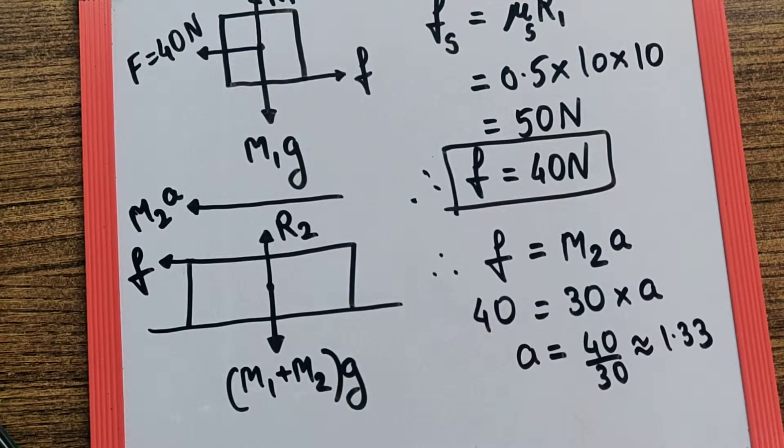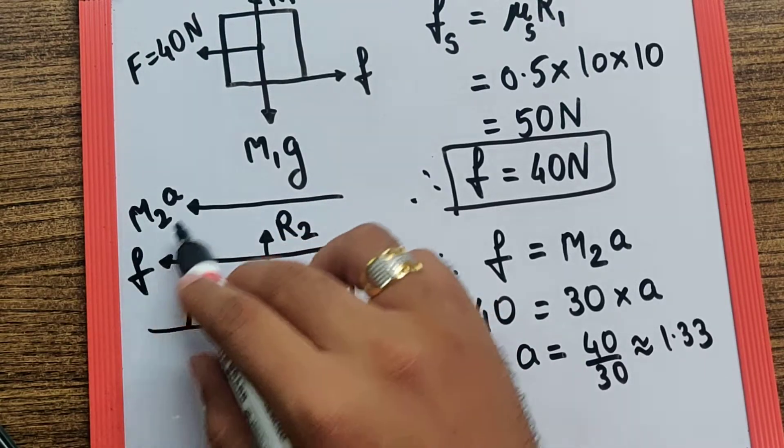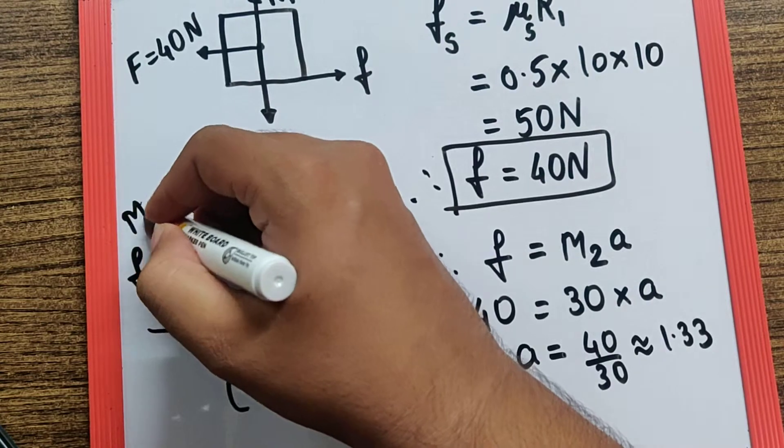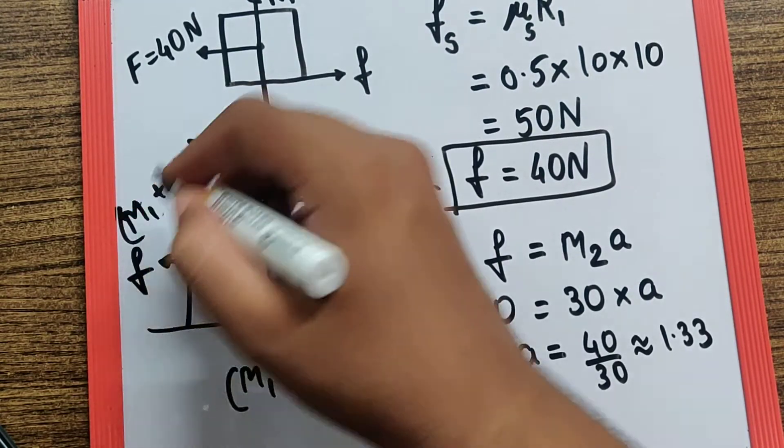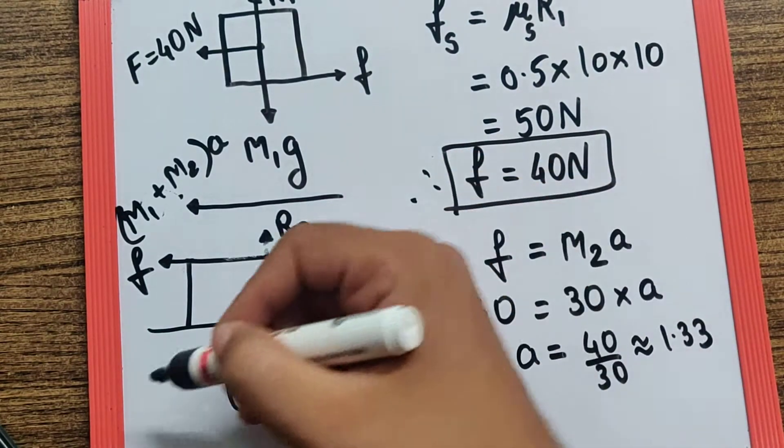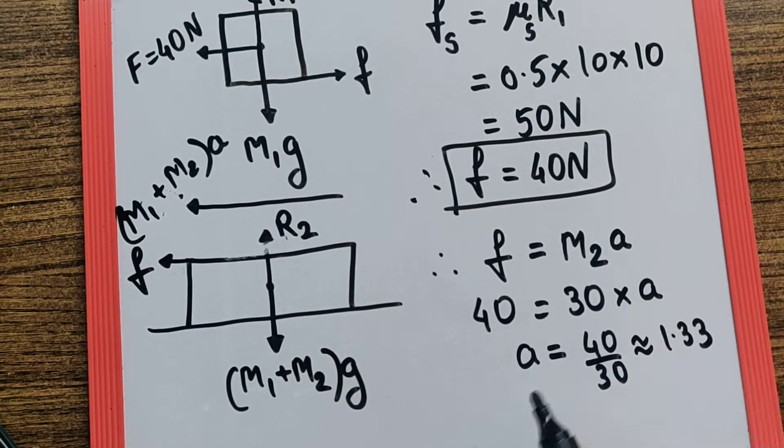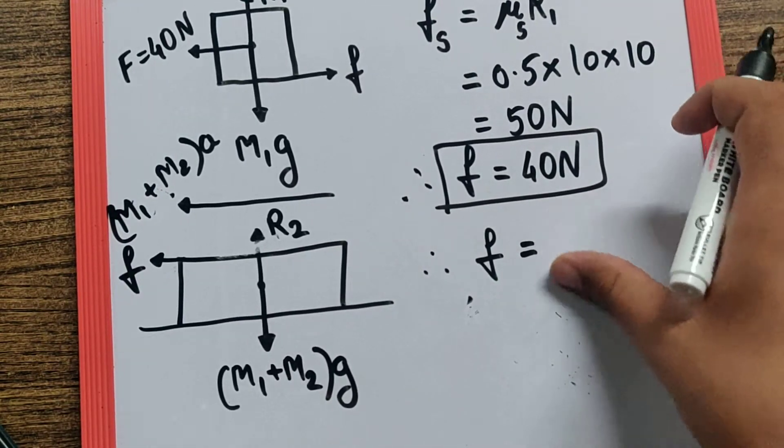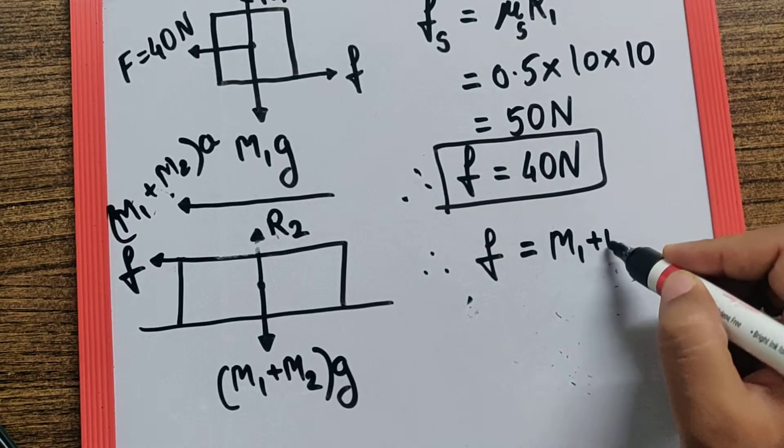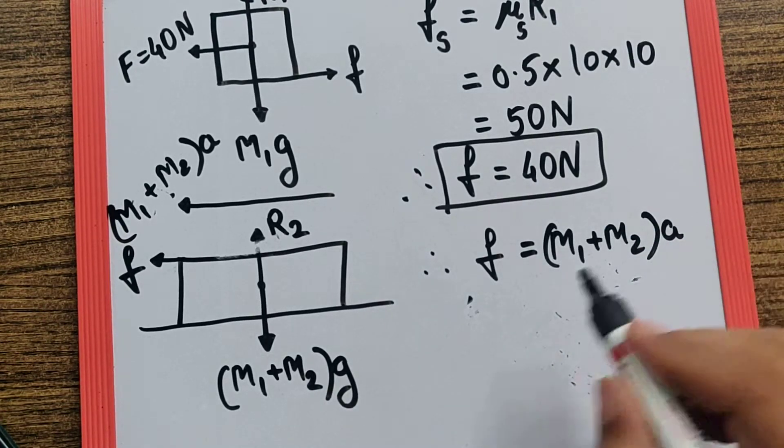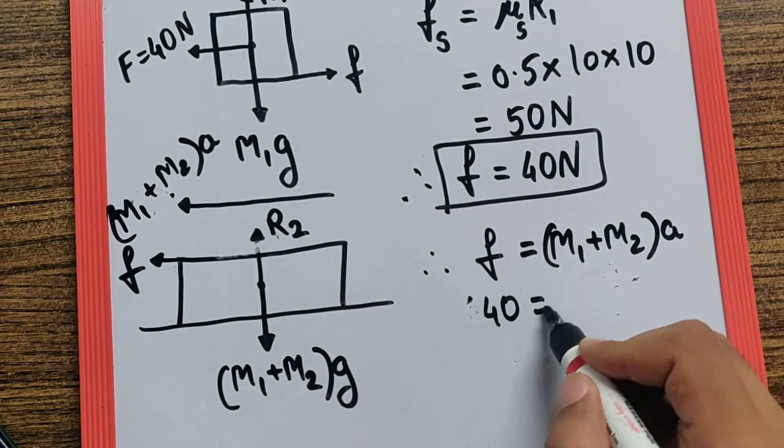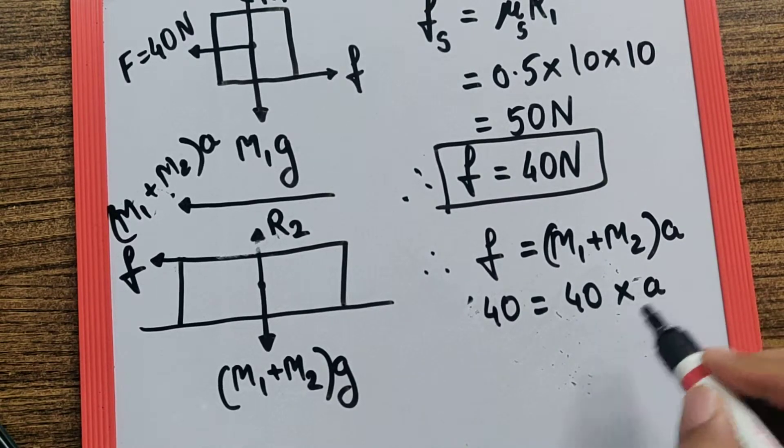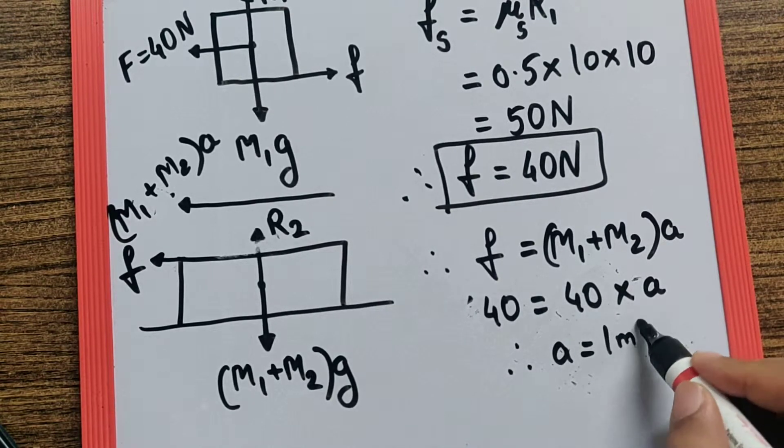And therefore this M2a must be changed to (M1 + M2)a since both bodies are going to move together. So friction is 40, M1 is 10, M2 is 30, so the total mass is 40. 40 equals 40 times a, that makes the acceleration as 1 meter per second squared.